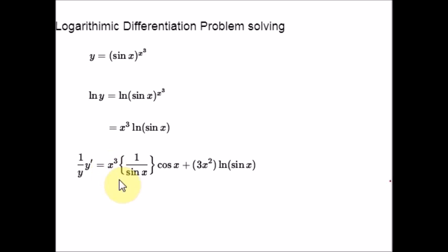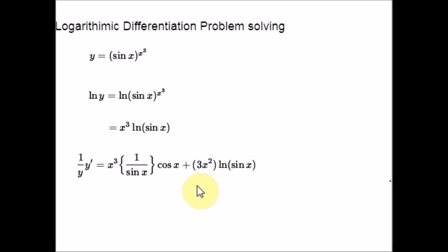The product rule gives: keep the first function as it is and find the derivative of the second, which is 1 over sin x — then by chain rule the derivative of sin x is cos x — plus keep the second function as it is and find the derivative of x cubed using the power rule, giving 3x squared. To get a common denominator, multiply the second term's numerator and denominator by sin x, so both fractions share denominator sin x.